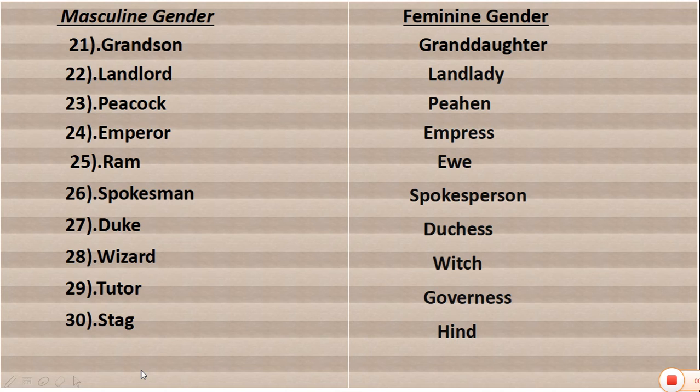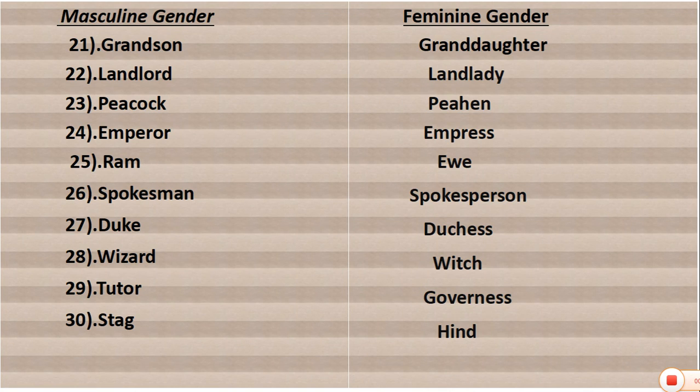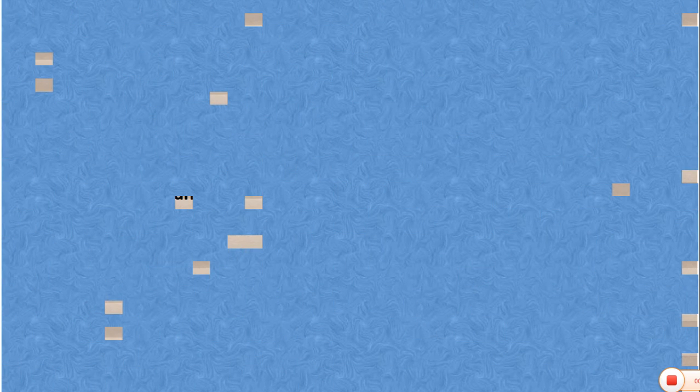So, this table shows the masculine and feminine words — the words we use for male and the words we use for female. I hope you understand this video and the topic of gender is now clear. Some questions are directly asked about masculine or feminine, so it is important. You have to learn these topics just as much as other topics.